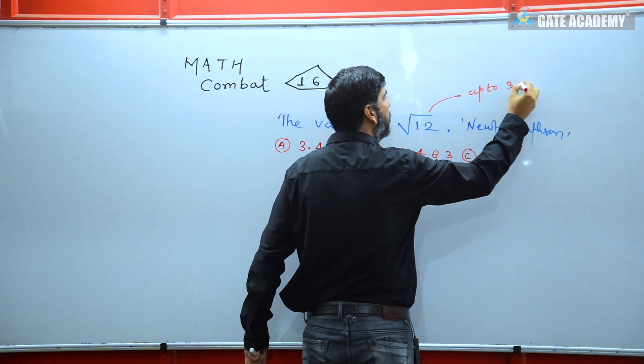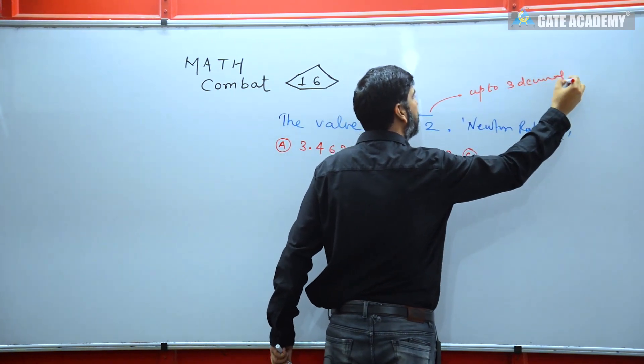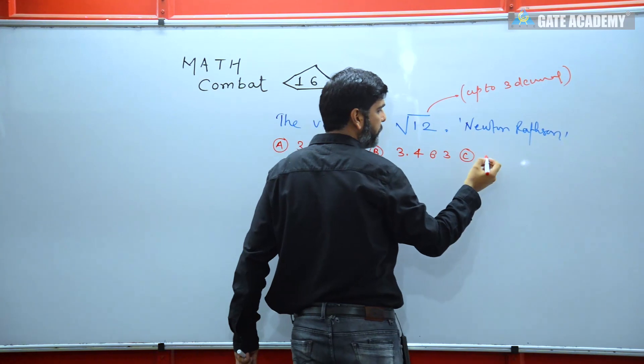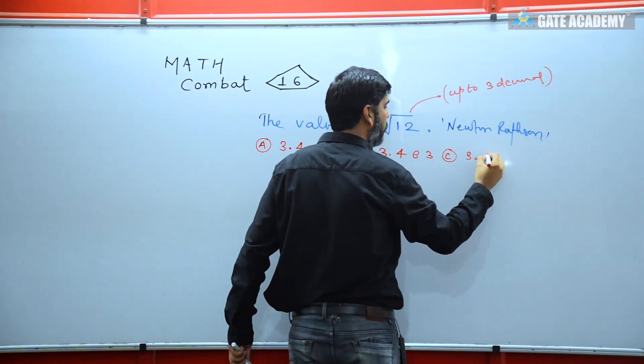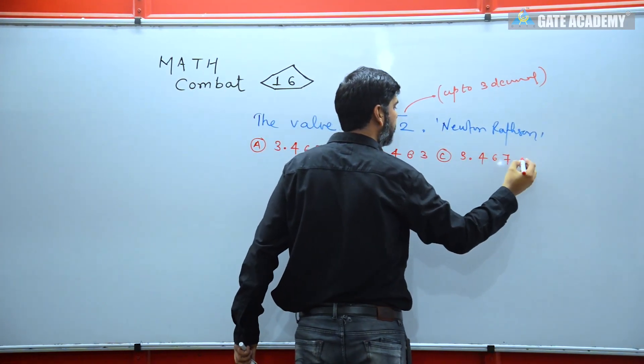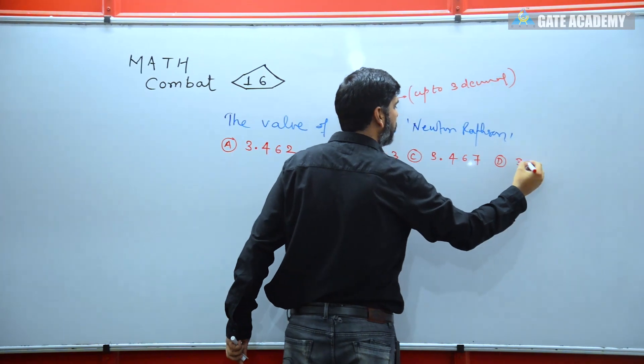And the last option C is 3.467. And option D is 3.634.